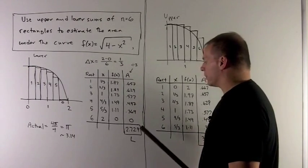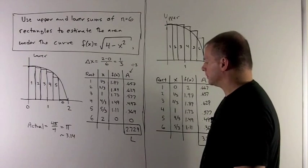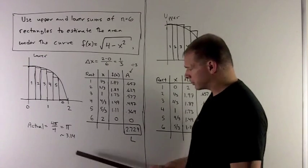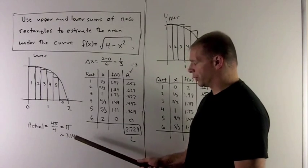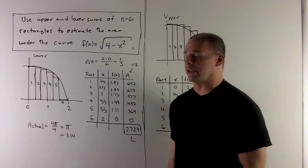I'm going to add all of these numbers up. We get 2.729, and we note that that's pretty close to 3.14, which is the actual area.